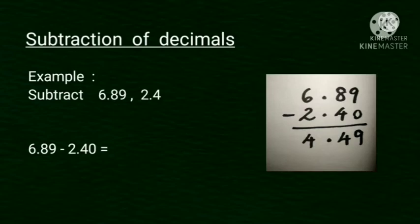We put the decimal point. You always remember that. We put the decimal point. Then 6 minus 2. 6 minus 2, 4. We get answer 4.49.